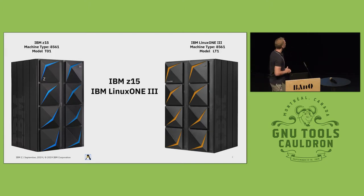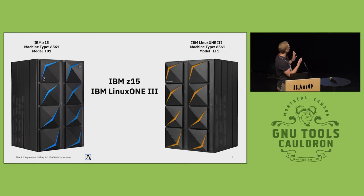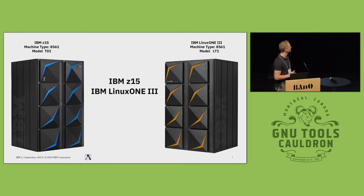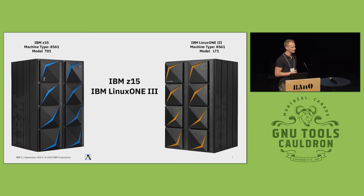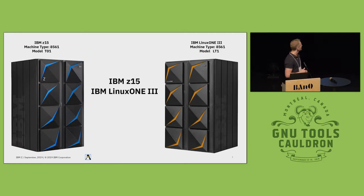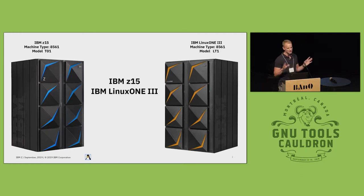The IBM Z15 comes in two flavors: the classic mainframe Z15 on the left and the LinuxONE version 3 on the right, especially tailored for Linux customers. It has an elastic pricing model for running thousands of containers under Linux. Between these two machines there is no substantial technical difference.